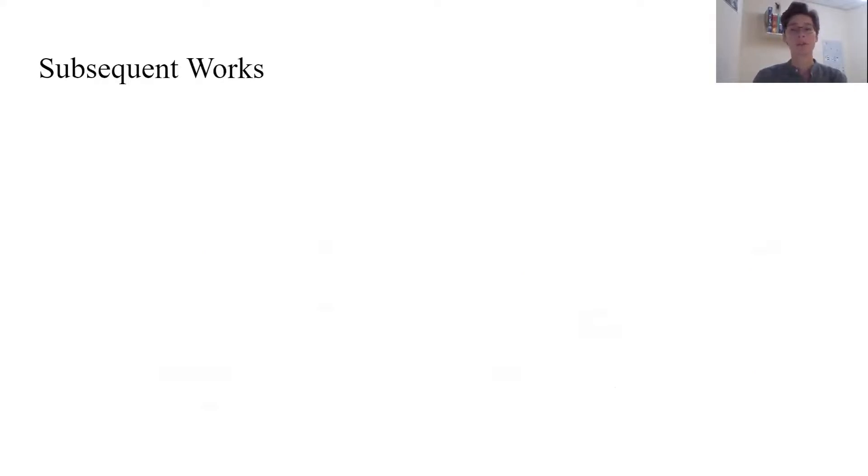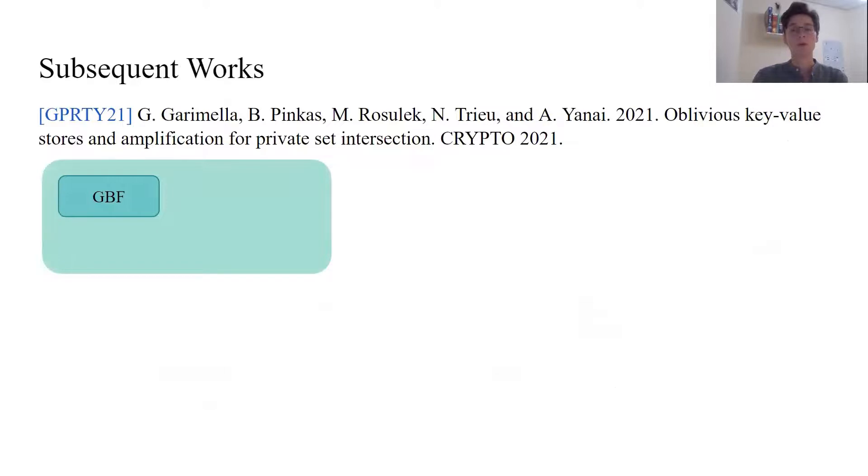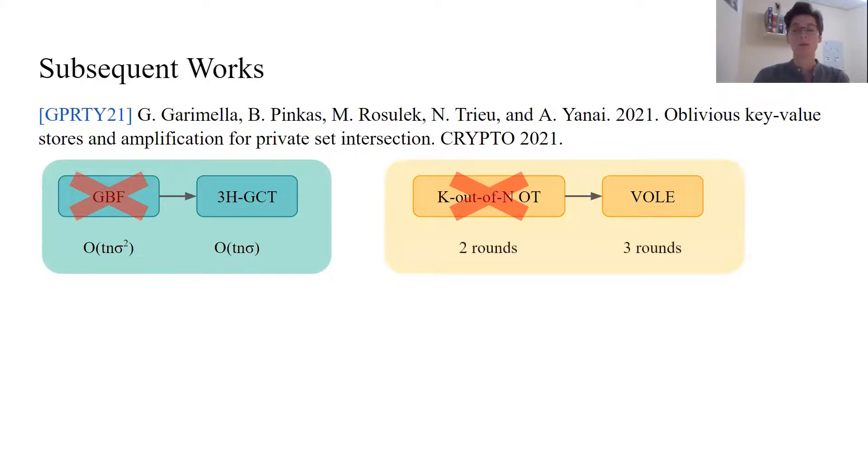The preprint of this article was published in February 2021. Subsequent to it, two significant multiparty MPSI works were published. In Garimella et al. 2021 authors followed our outline, and instead of GBF utilized the new data structure, 3H-GCT, which belongs to the same class of oblivious k-value storages as GBF, but magnitude sigma smaller. In this way, they achieved sigma times better asymptotic complexity than us. Because 3H-GCT has no empty positions, they had to limit the malicious party in another way, using V-OLE protocol instead of K out of N OT. The most round efficient V-OLE, however, allows only at least 3 rounds of communication in the online phase of such MPSI protocol. Sadly, there was no implementation made for this multiparty case.